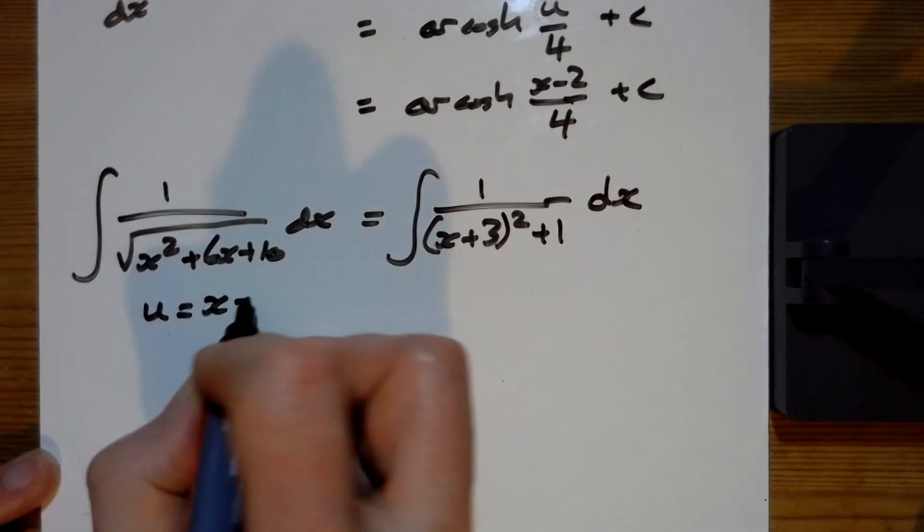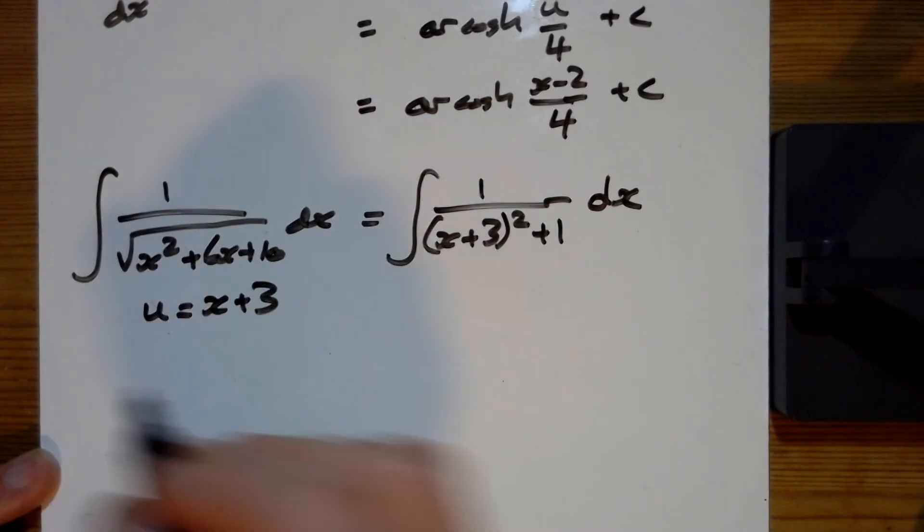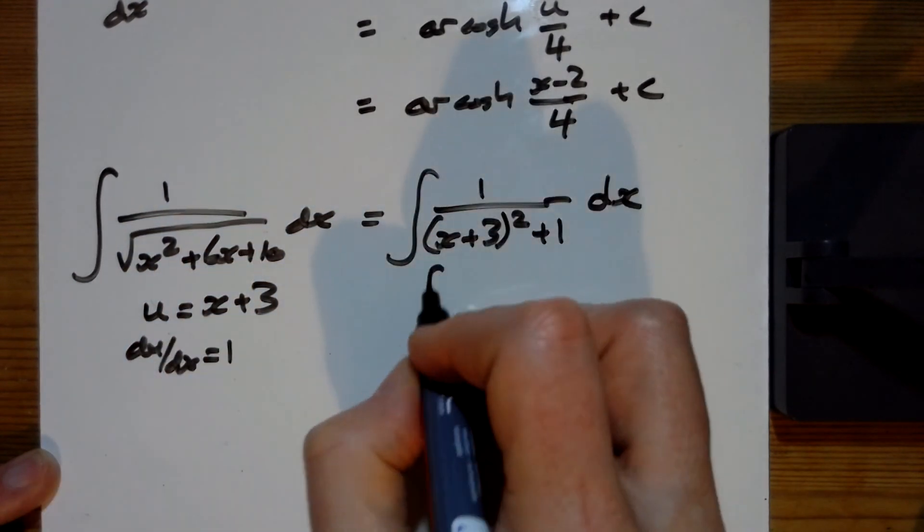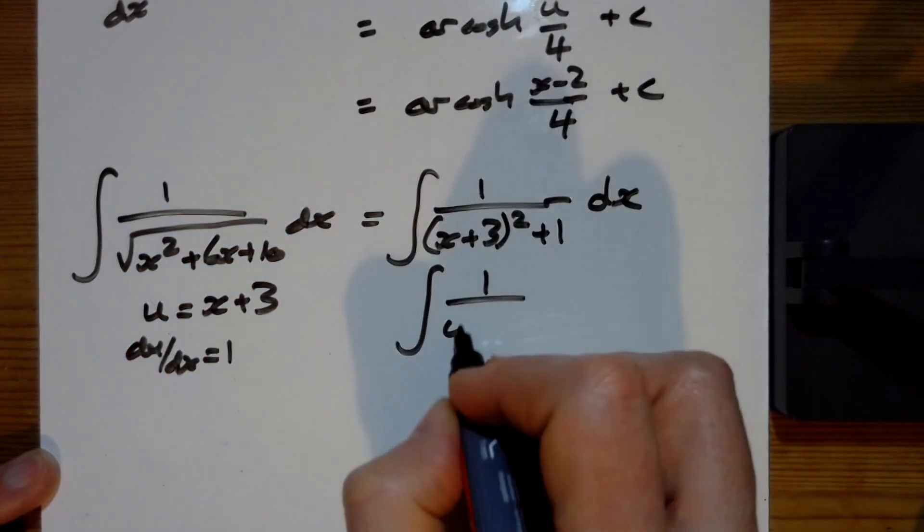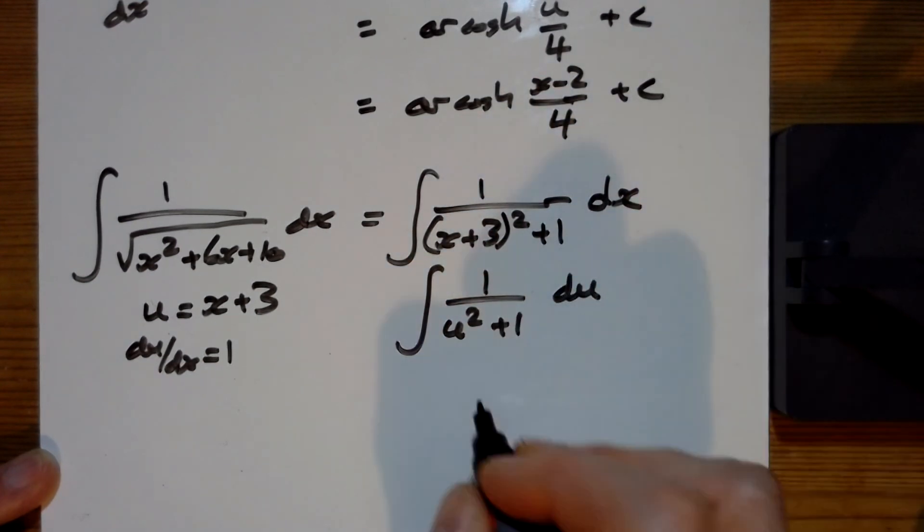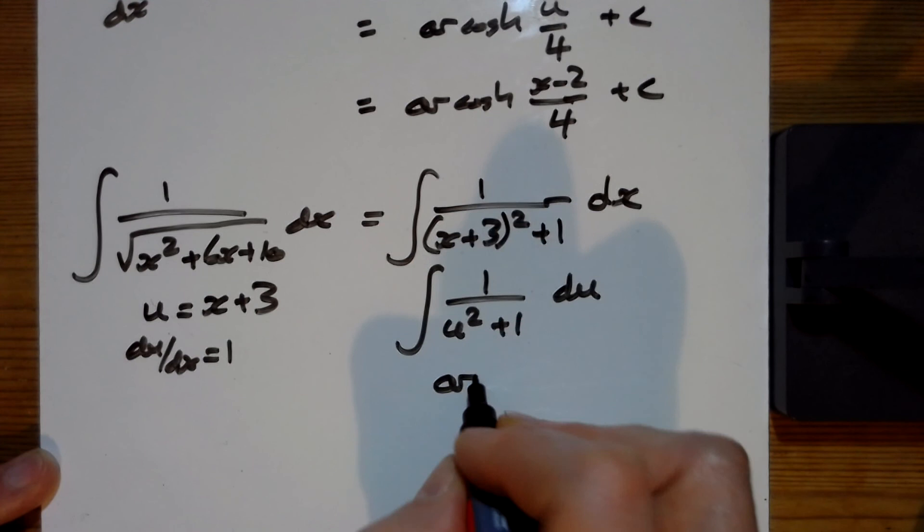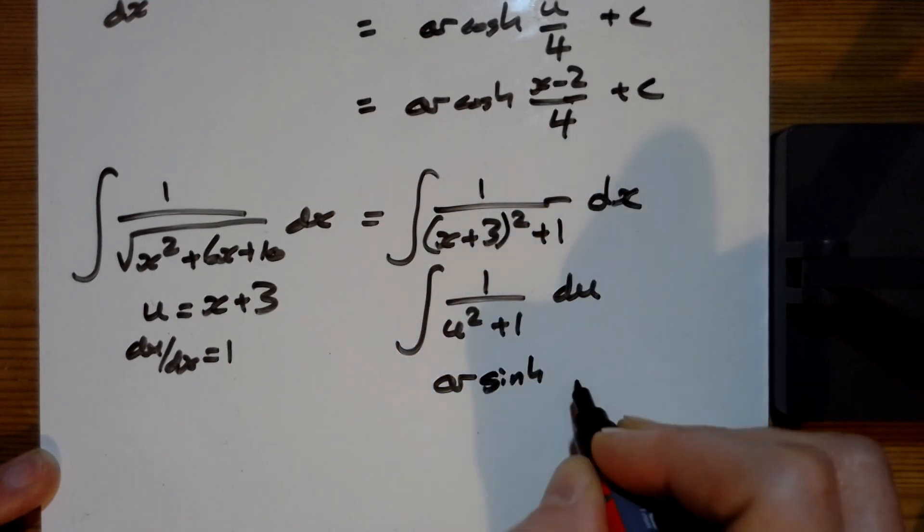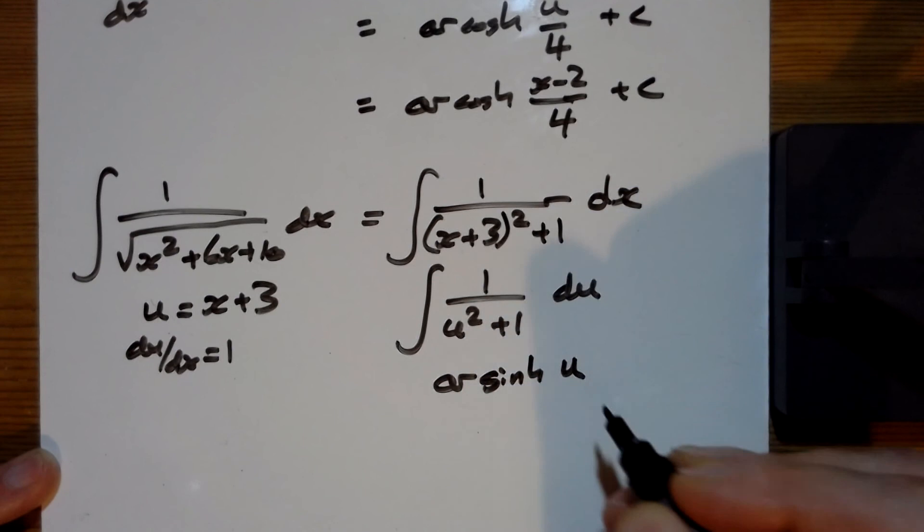u this time equals x plus 3, so once again that du by dx is equal to 1, so we can just replace this with u squared plus 1 du. Because it's a plus this time we have an arsinh, and that's just arsinh u, there's nothing extra there at all.